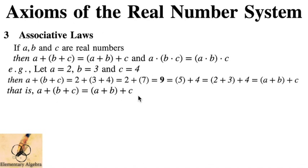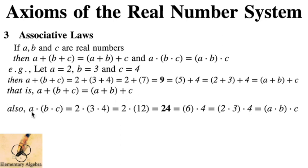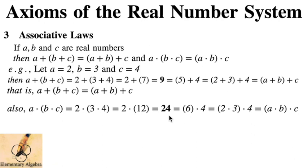For multiplication: A times the quantity B times C. Substituting, we have 2 times the quantity 3 times 4. We multiply inside first: 3 times 4 equals 12, then 2 times 12 equals 24. On the other side, quantity A times B times C: multiply 2 times 3 first to get 6, then 6 times 4 equals 24. Both sides give 24, so we have established that associativity also holds in multiplication.